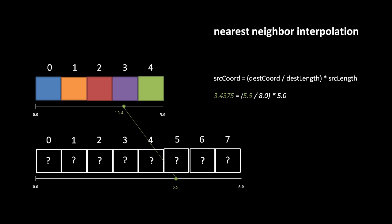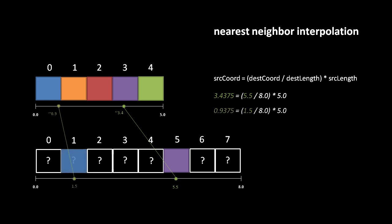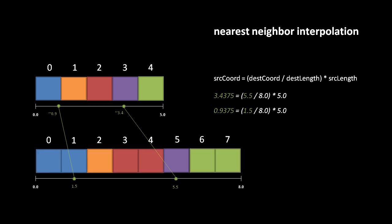So given a destination coordinate 5.5, we find the corresponding source coordinate by dividing by 8 and then multiplying by 5, yielding 3.4375. In nearest-neighbor interpolation, the idea is that for every pixel center in the destination, we find the corresponding point in the source and simply copy the pixel value there. So because 5.5 corresponds to 3.4375, which falls in the bounds of the purple pixel, that destination pixel will have the same purple color. If we do the same for the destination pixel at coordinate 1.5 — divide by 8, multiply by 5 — we get 0.9375, which is in bounds of the first pixel, so the second destination pixel will have that same blue color. We use this method for every pixel, and in nearest-neighbor interpolation, every pixel value in the destination comes verbatim from the nearest corresponding pixel in the source.